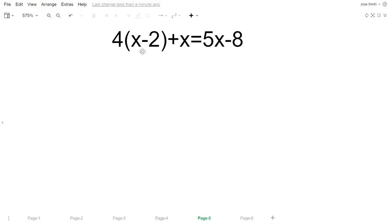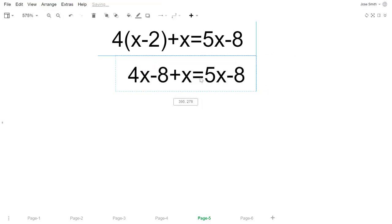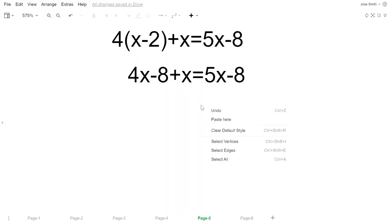All right, so let's try another example. We got similar equations, so let's solve real quick. Let's get rid of the parentheses by distributing. 4 times x is 4x, 4 times negative 2 is negative 8, and the rest of the equation stays the same: plus x equals 5x minus 8. So we got 4x and positive x, so let's combine those two terms.